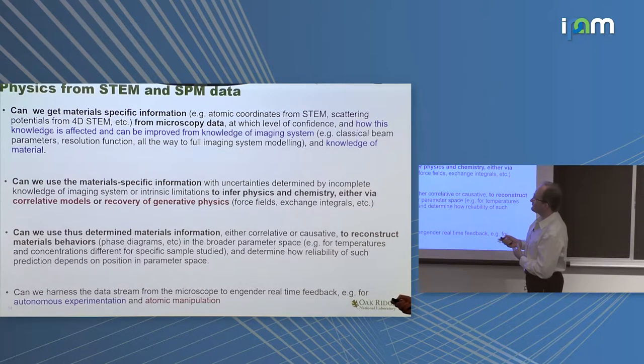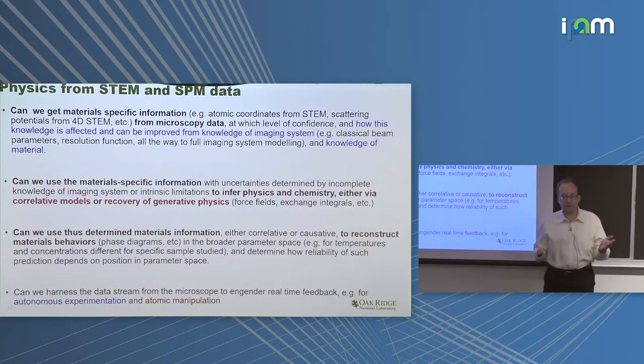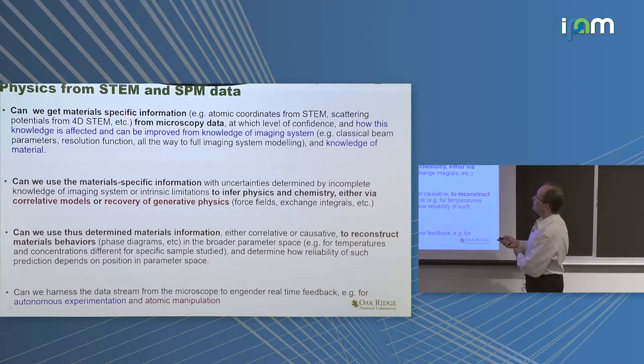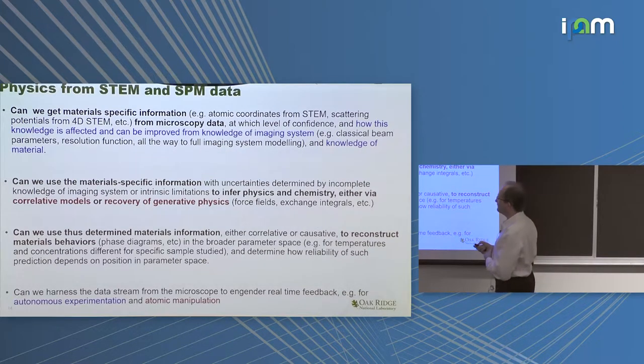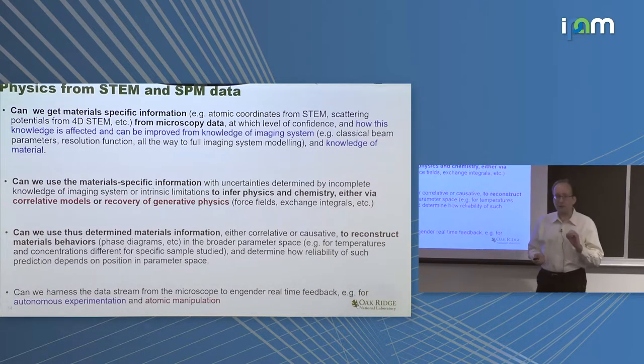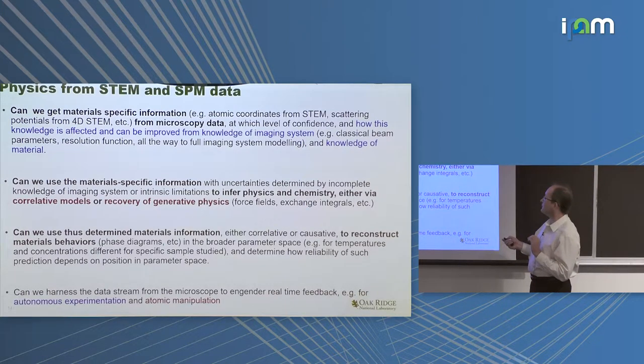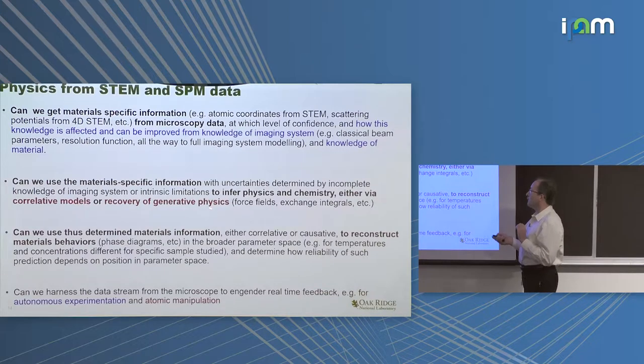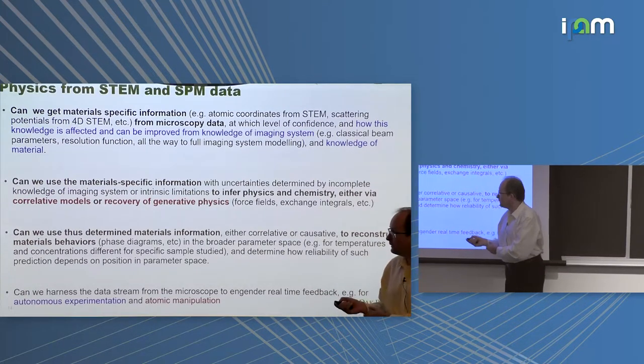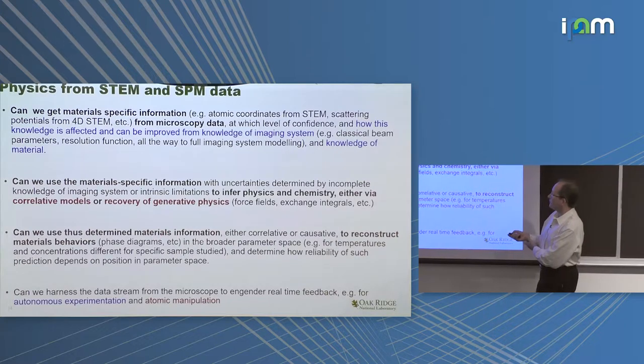We wrote a roadmap about how can we learn physics from microscopic data. The first type of problem is, I need to take my microscopy data and convert it to material-specific information, for example atomic coordinates or scattering potential. And I also want to find out how much I can trust this data. The second thing is if I have this material-specific information with known uncertainties, can I use it to learn or infer physics or chemistry?